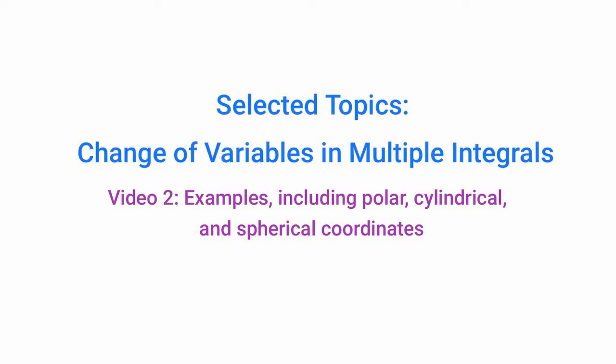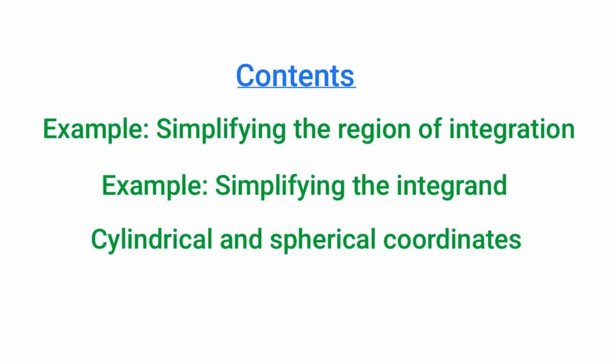Hi guys, this is the second video in my series on change of variables in multiple integrals. In the first video I talked about the theory and intuition leading up to the formulas for change of variables. In this video I'd like to go over a number of examples. As we go through these examples, one thing I want to emphasize is that there are two main reasons you might want to make a change of variables in a multiple integral: reason number one is to simplify the region of integration, and reason number two is to simplify the integrand itself. In single variable calculus you don't usually see integrals where making a change of variables helps you to simplify the region of integration, so that's something that's kind of new to the world of multiple integrals.